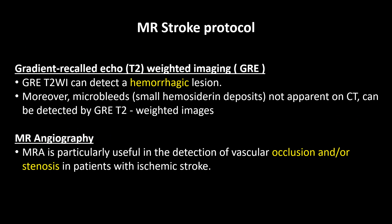Another important sequence is the gradient recalled echo, or GRE. GRE can detect a hemorrhagic lesion. In the context of ischemic stroke, one can determine if there is hemorrhagic conversion by looking at the GRE sequence. Moreover, microbleeds or small hemosiderin deposits not apparent on CT brain can be detected on GRE images.